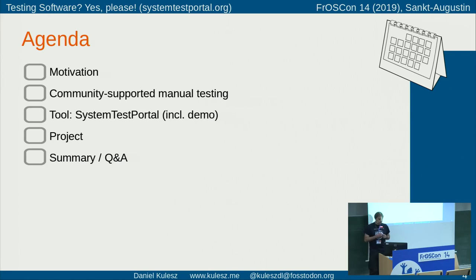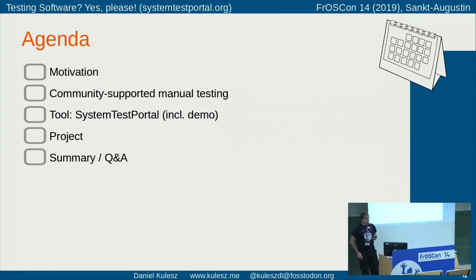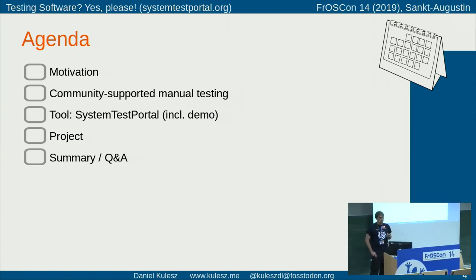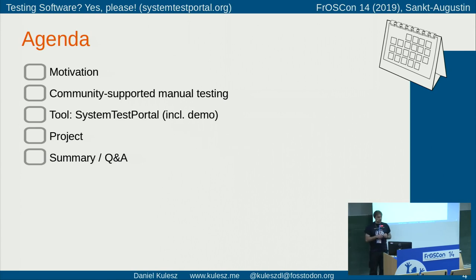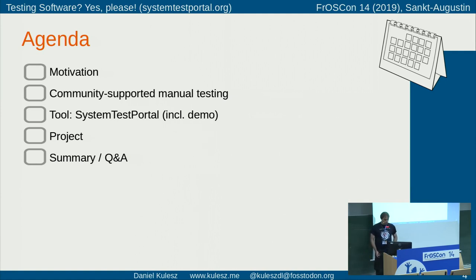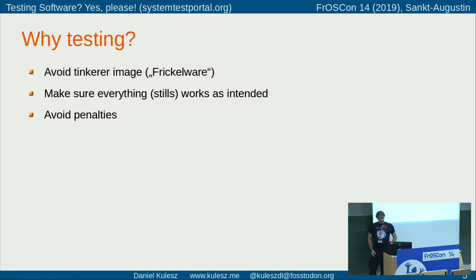The good thing is that I'm trying to address all of these groups in the audience, so I hope there will be something for everybody. Quick agenda: first I'd like to motivate the topic and introduce the idea of community supported manual testing — maybe sounds a bit scary but we'll get into that. After that I'd like to give a quick demo of our tool, the System Test Portal, which was built to help with that, then talk about the open source project behind it, and finally give a quick summary with hopefully some time for Q&A.